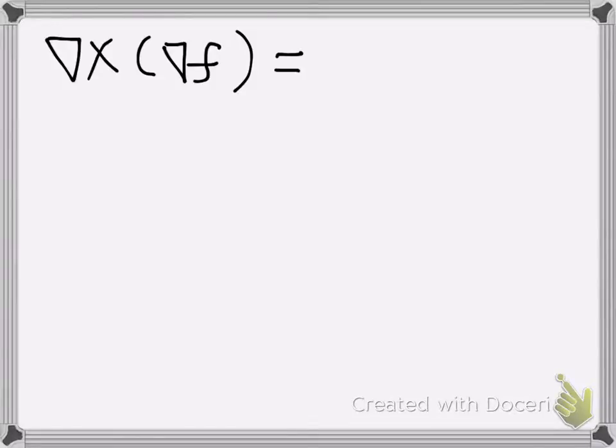So if you wrote down how we do this in terms of the Levi-Civita tensor, I just do the gradient first and then the curl, and I should get epsilon i j k, partial j, partial k of f.